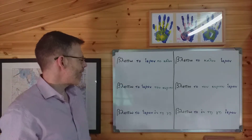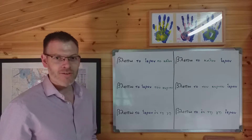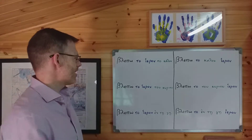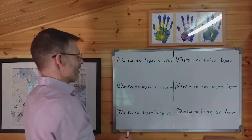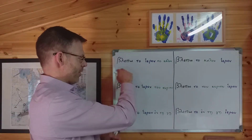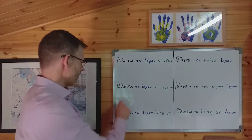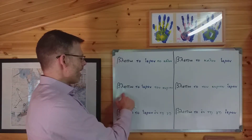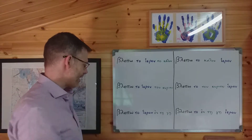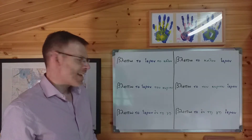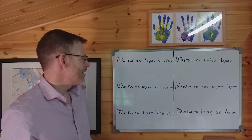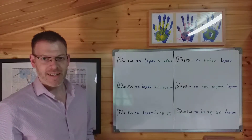First look at the left-hand side of the board. There are three sentences here, all of which probably look quite familiar in structure. First: blepo to hieron to kalon — I see the beautiful temple. Second: blepo to hieron to kuriou — I see the temple of the Lord; to kuriou is in the genitive. And third: blepo to hieron en te ge — I see the temple in the land. All of these look fairly familiar and you can see how to translate them without any great difficulty.